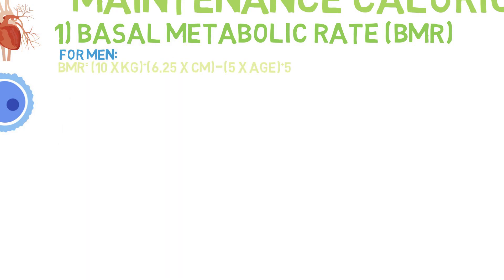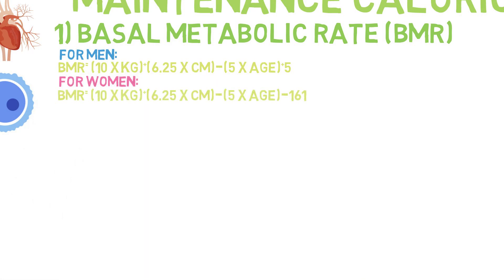For men it would be: 10 multiplied by your weight in kilos, plus 6.25 multiplied by your height in centimetres, minus 5 multiplied by your age. We can calculate what is in the brackets first and then add or subtract between them after. For women it is the exact same idea, however at the end instead of adding 5, we minus 161.